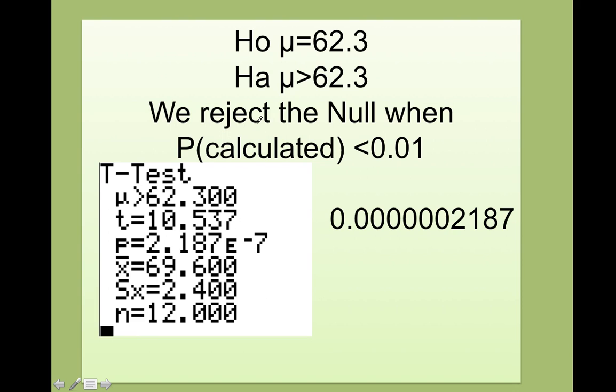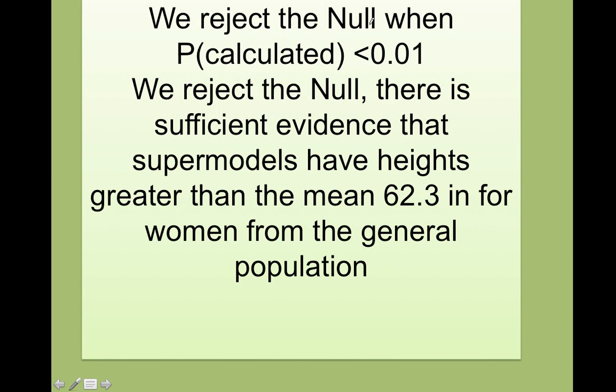Do you remember our calculations? We got a really small p-value. What that means is that because this value is less than 0.01, I'm going to reject the null. But what does that mean? That means that I don't want this guy and the claim is actually true. We can say that we reject the null when we had the significant level of 0.01. There is sufficient evidence that the supermodels have heights greater than the mean 62.3 inches for women from the general population.